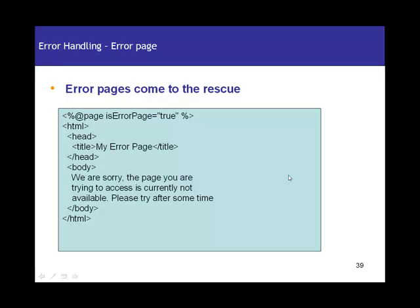Error pages come to your rescue. Error pages are nothing but simple JSP pages again, but with a difference. The only difference is you have this page directive attribute called `isErrorPage` and you set that attribute to true. As soon as you set the `isErrorPage` attribute to true on the page directive, your JSP page becomes an error page and it can be used as such. This is the error page you'll be showing to the end client when there is any kind of error. Now we know we need to show a fancy error page to the end user, and we've developed our error page. But how do you display this error page to the end user, since the end user actually requested some other page?